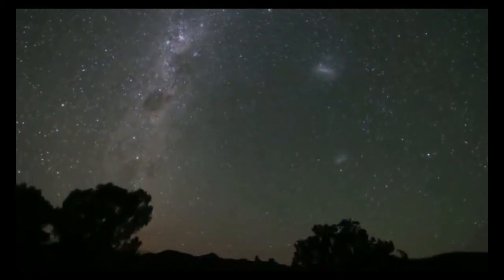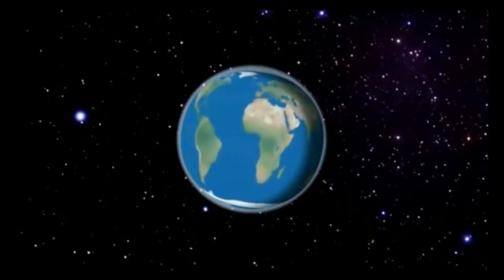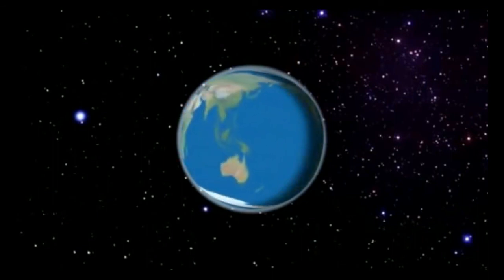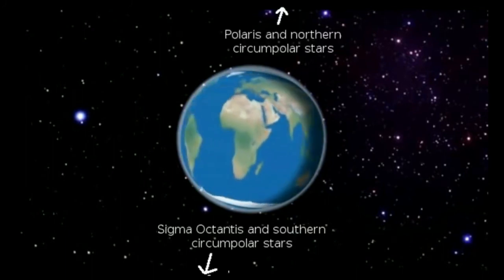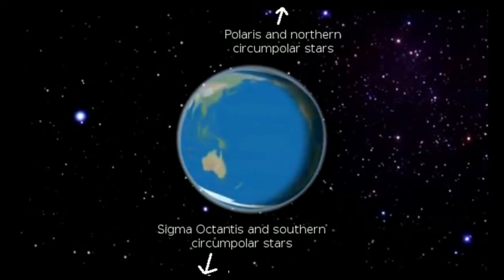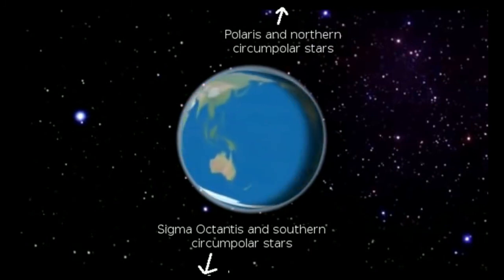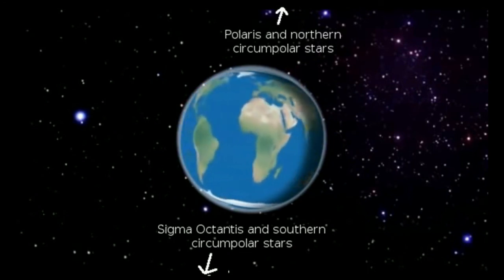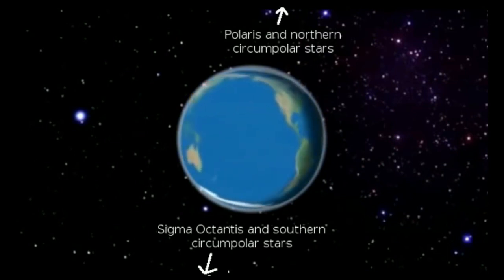This apparent spinning of the stars around a north and south axis is perfectly explained by the heliocentric globe model. As the spherical Earth rotates on its axis, our view of the essentially stationary distant stars rotates. The distant stars to the north and south spin around a point because we are seeing them over the spinning axis of the Earth. Depending on how far north or south you are, some stars stay above the horizon all night long — these are called circumpolar stars — but they are completely different stars in the north and in the south.